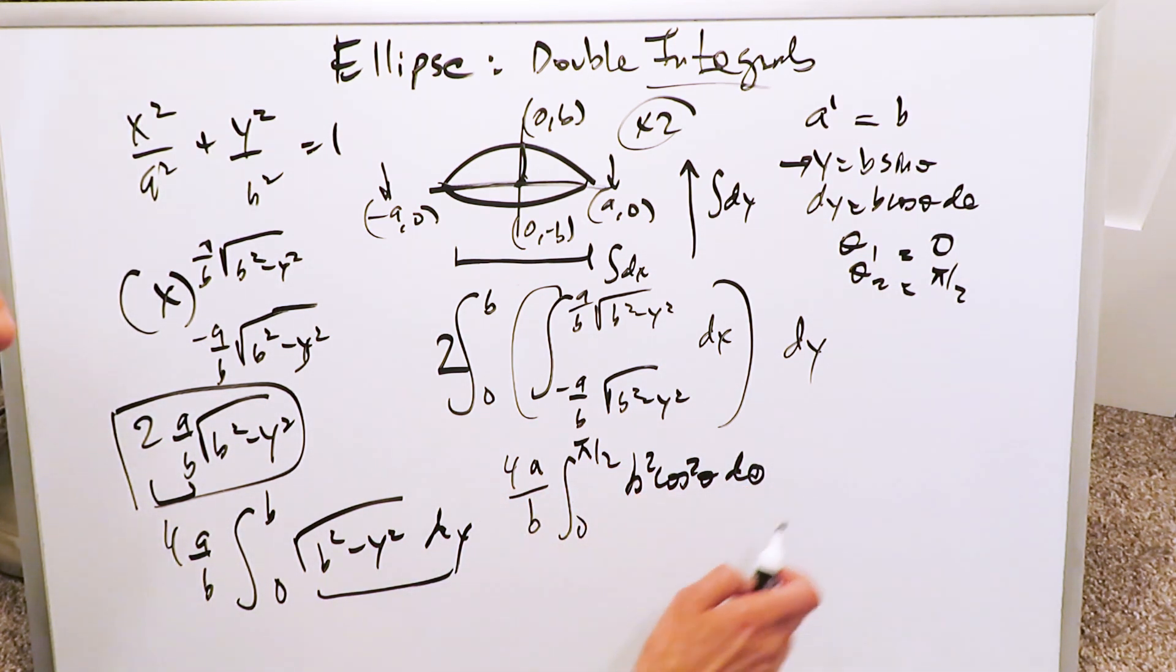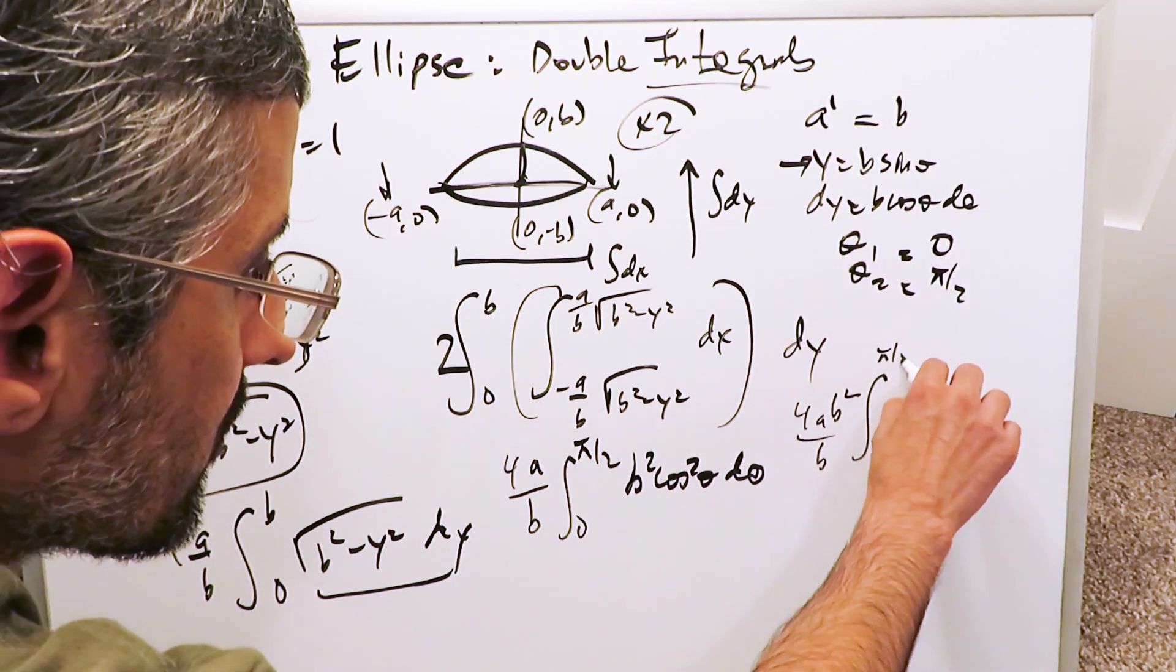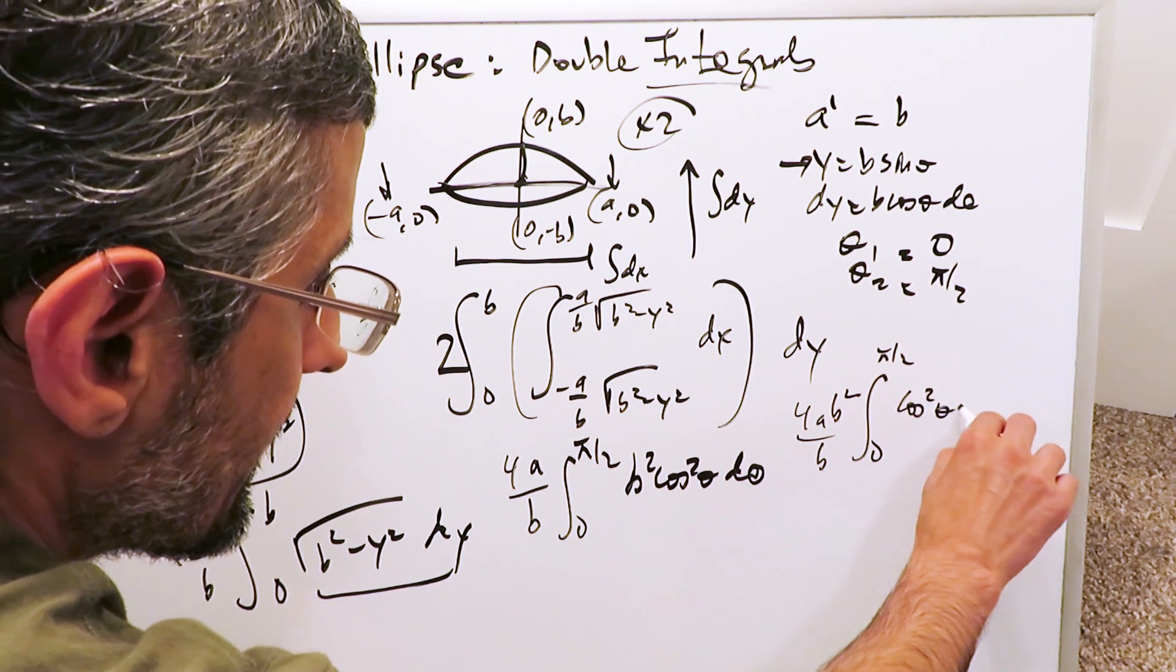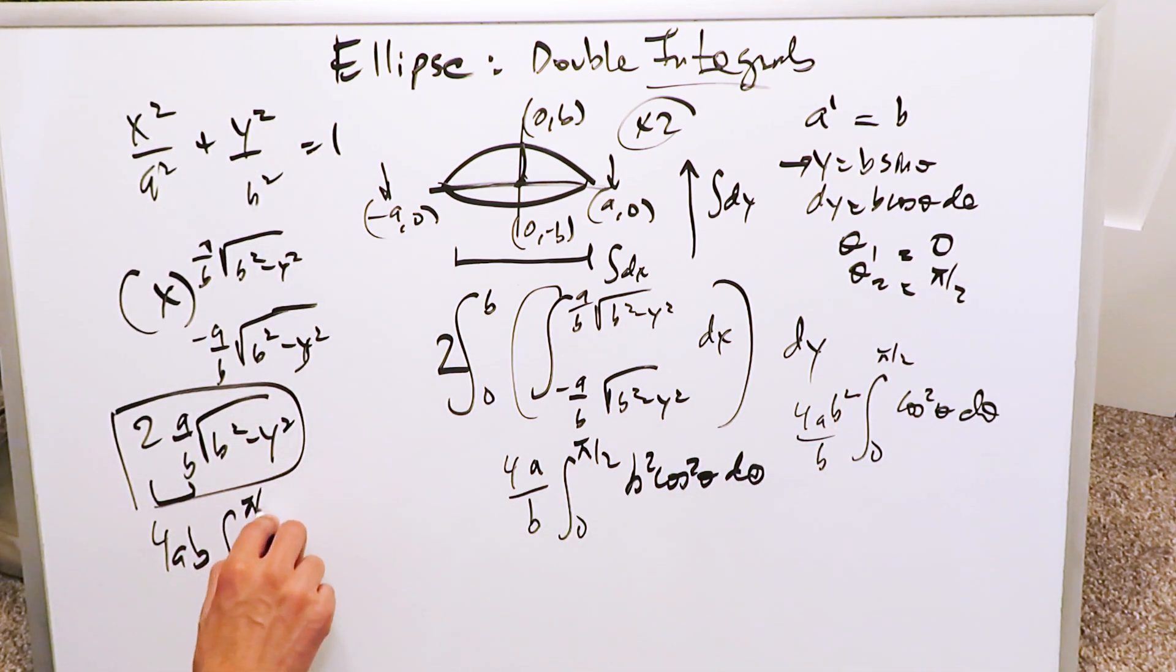4ab squared over b integral 0 pi over 2 cosine squared theta d theta. And you know you're going to bring a power reducing identity or a half angle formula over there. When you do all of that, you simplify this b and this b squared. You have here a 4ab integral 0 pi over 2. Your half angle or power reducing identity, 1 plus cosine 2 theta over 2 d theta.